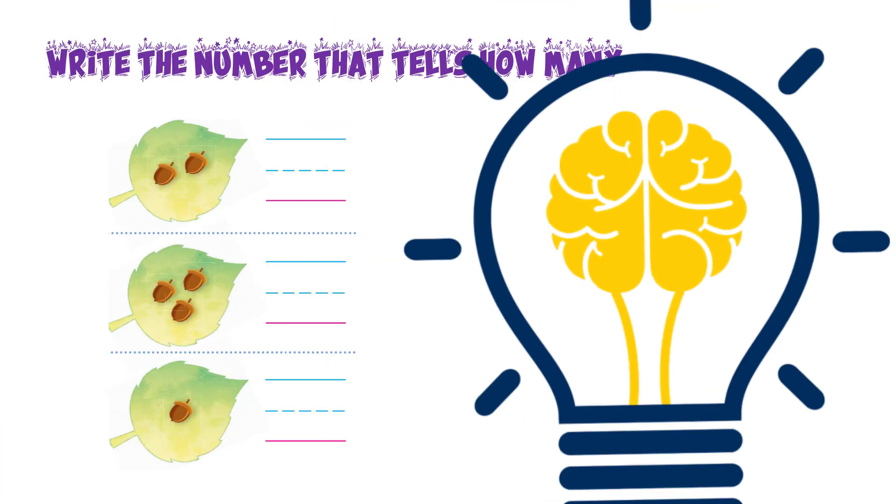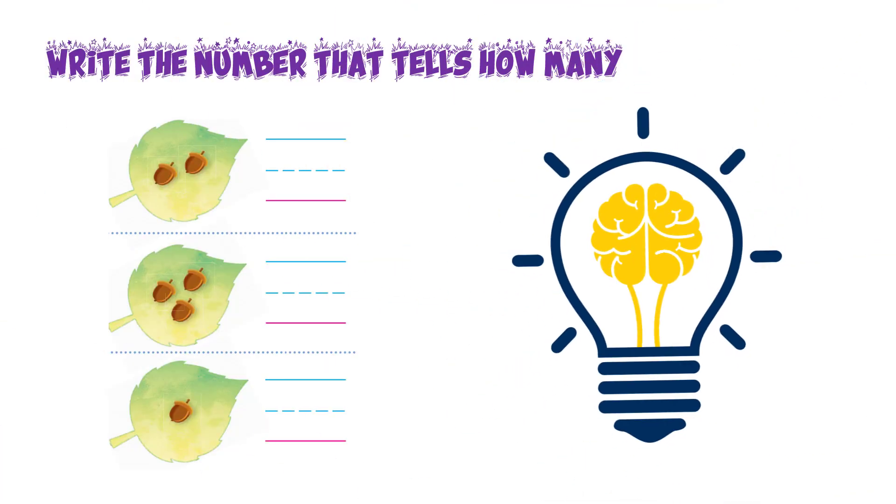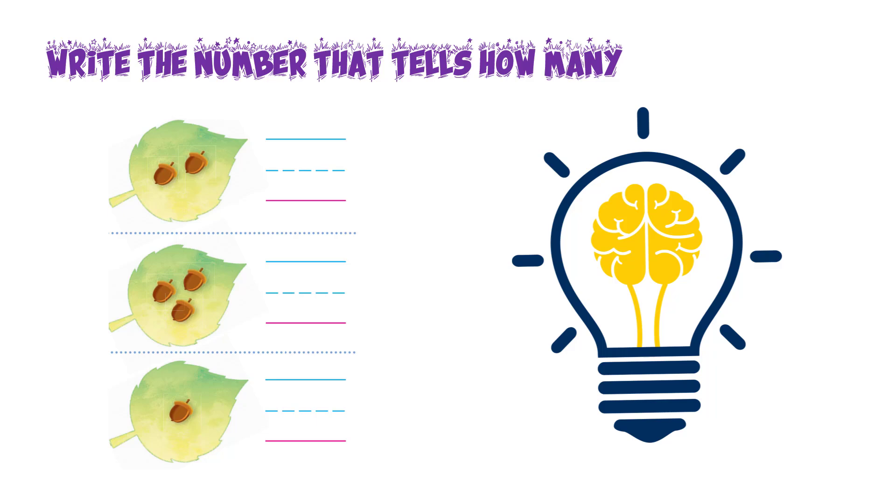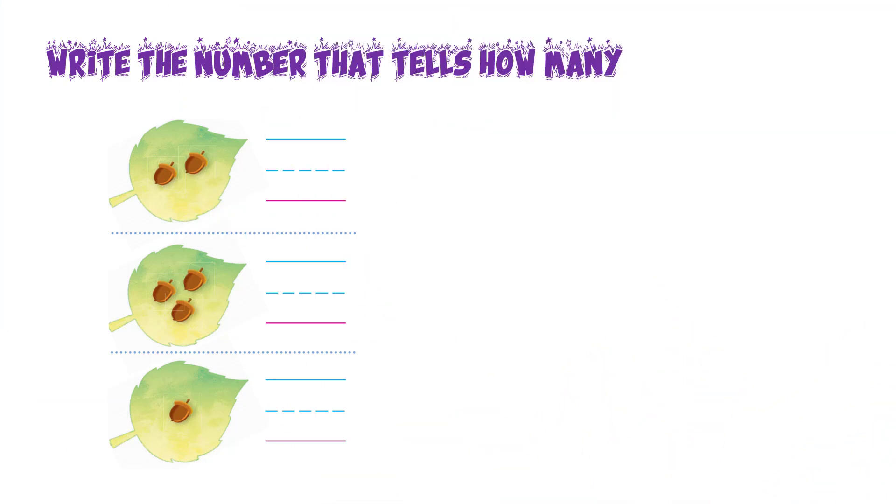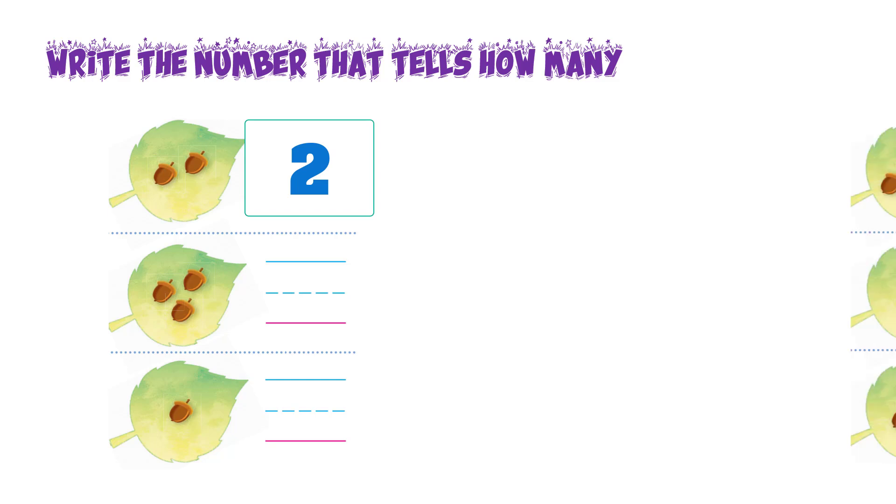Now, it's time to practice some problems. You have to count the number of objects kept on the leaf. For example, the first leaf has 2 objects. So, you will write 2 on the dotted line. Similarly, you have to solve all these problems.